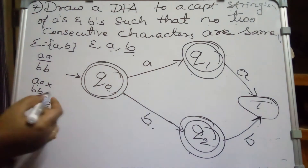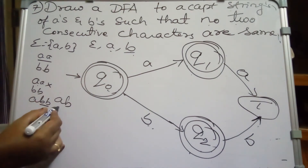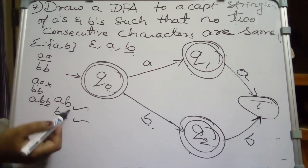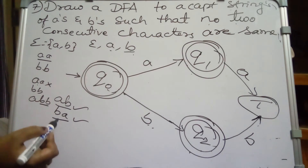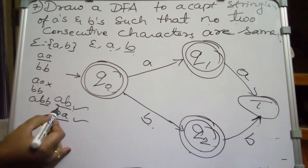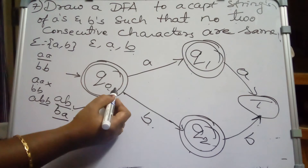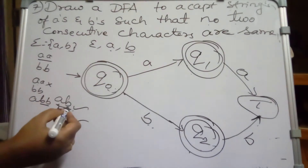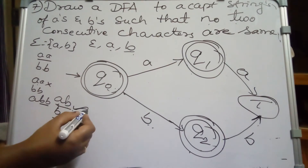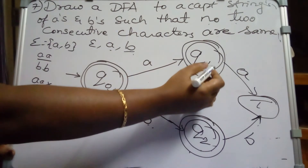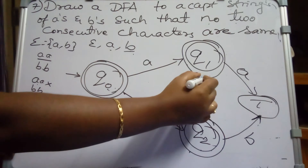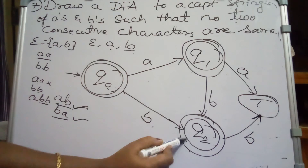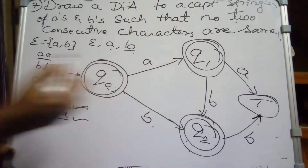If the input is AB or BA the string must be accepted because two consecutive symbols are not the same — they are different. From Q0 on A it goes to Q1; if the next input is B, the string AB must be accepted, so Q1 on B moves to the final state Q2.